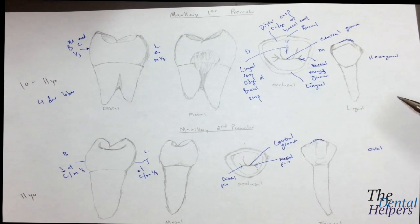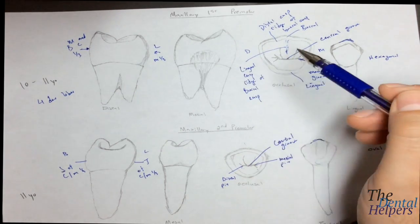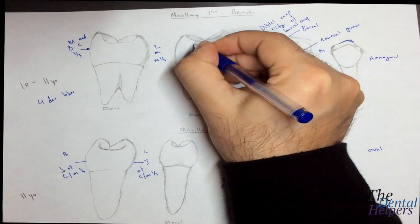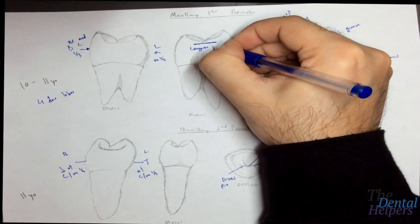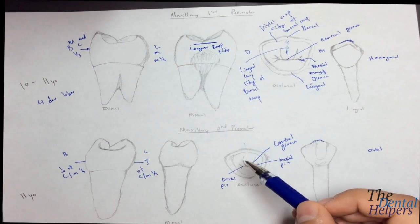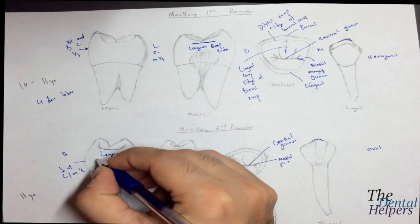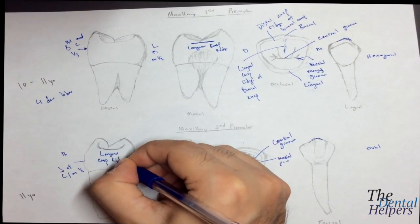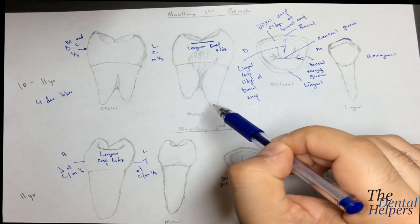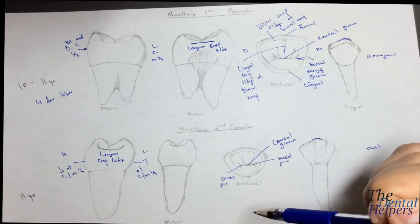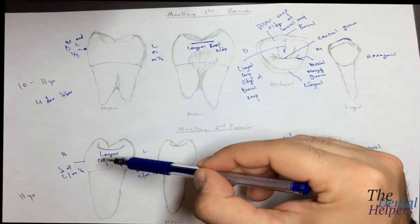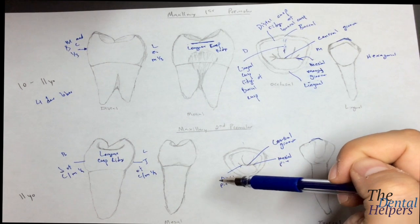Looking at the mesial and distal cusp ridges: the mesial cusp ridge of the buccal cusp is the longest for the maxillary first premolar, while the distal cusp ridge is the longest for the maxillary second. Also regarding cusp height, in the maxillary first the buccal cusp is a lot higher than the lingual, while in the maxillary second the buccal and lingual cusp heights are just about the same.